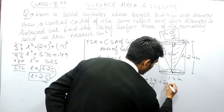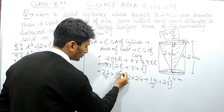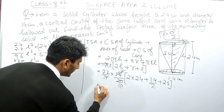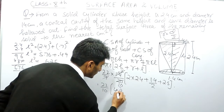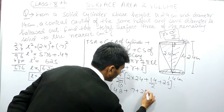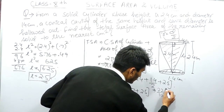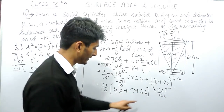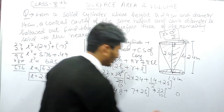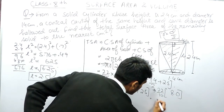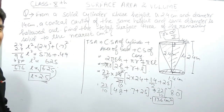Substituting l = 2.5 into the formula: (22/7) × 0.7 × (2 × 2.4 + 0.7 + 2.5) = (22/10) × (4.8 + 0.7 + 2.5) = (22/10) × 8 = 17.6. So the total surface area of the remaining solid is approximately 17.6 cm².